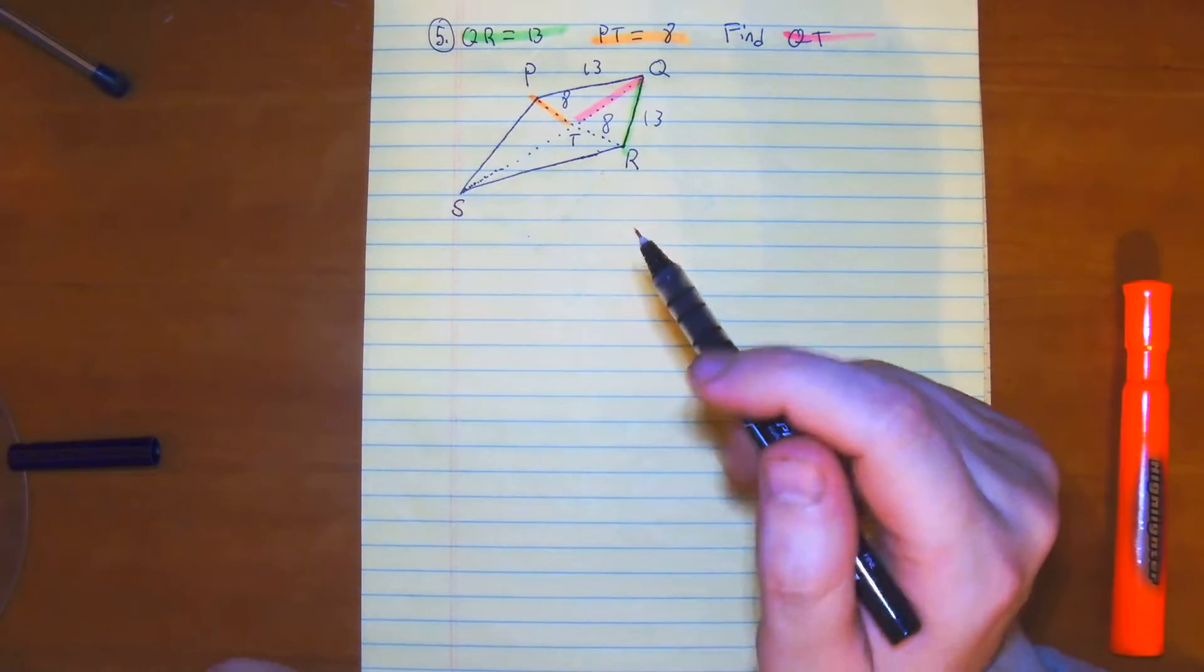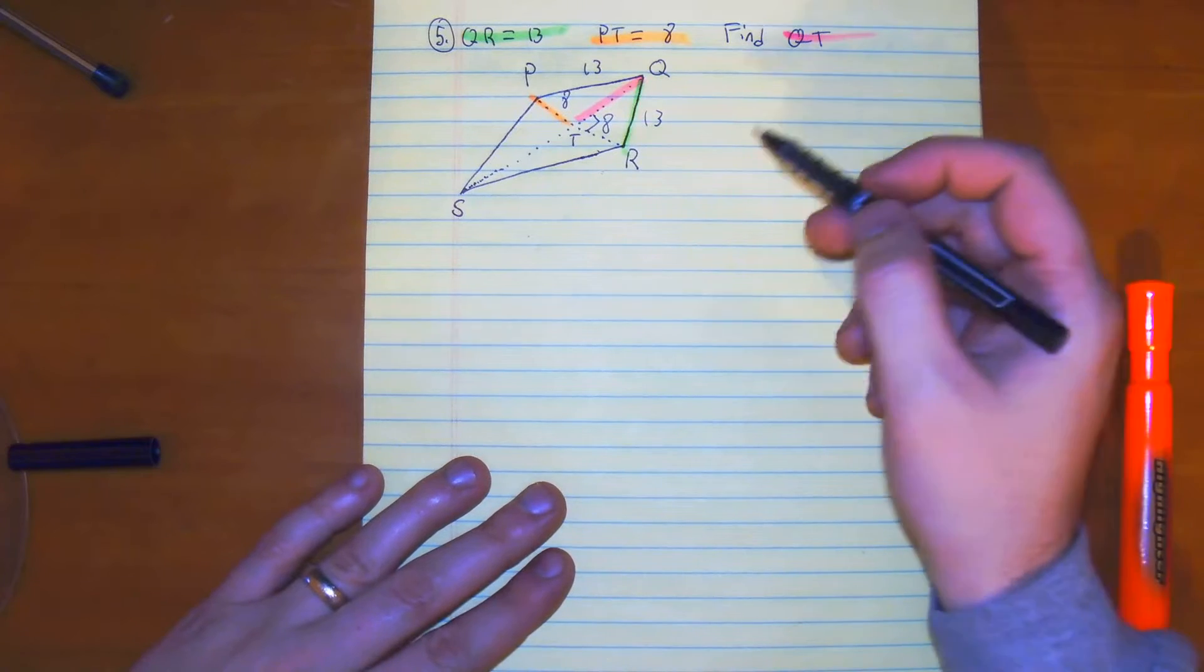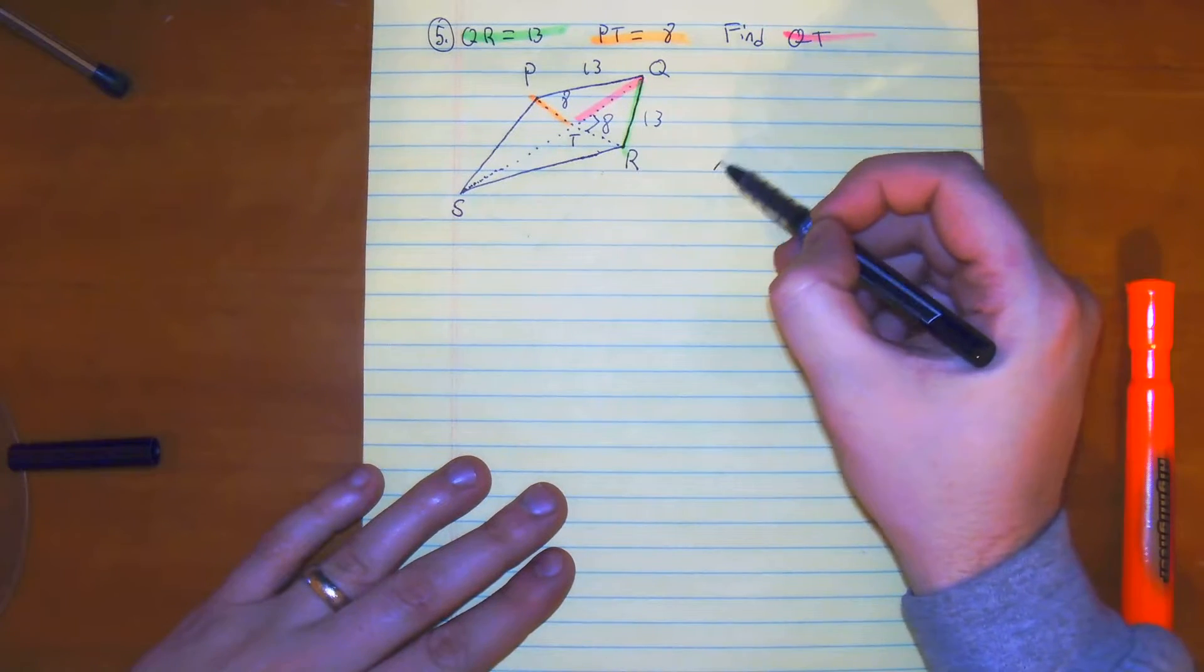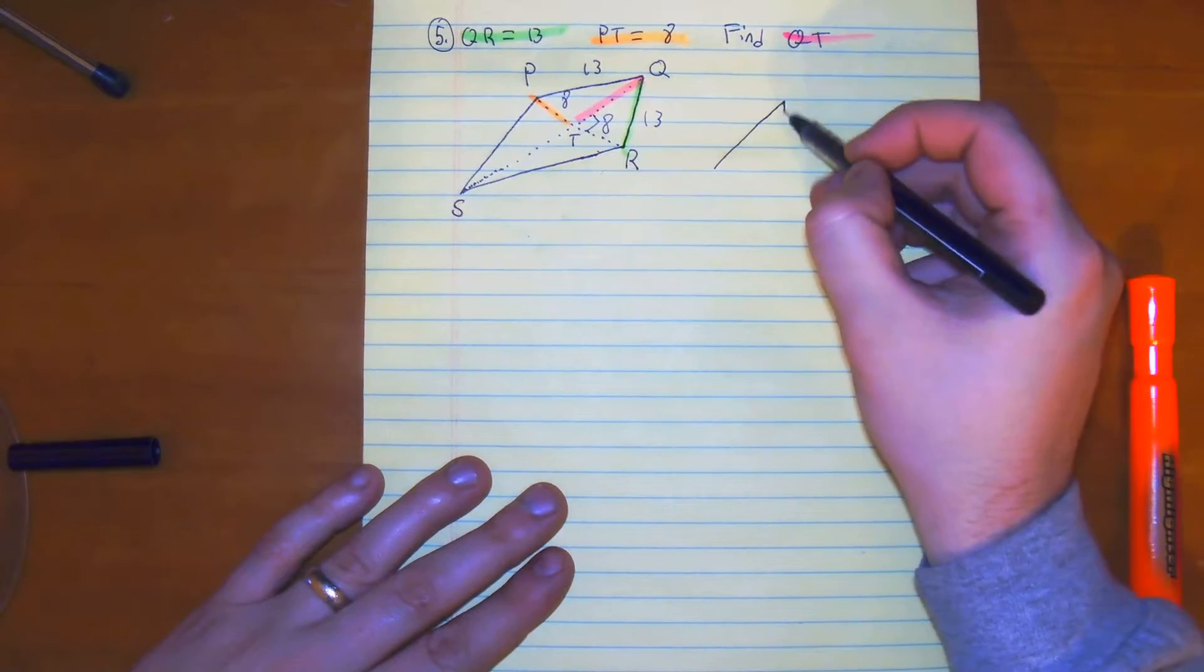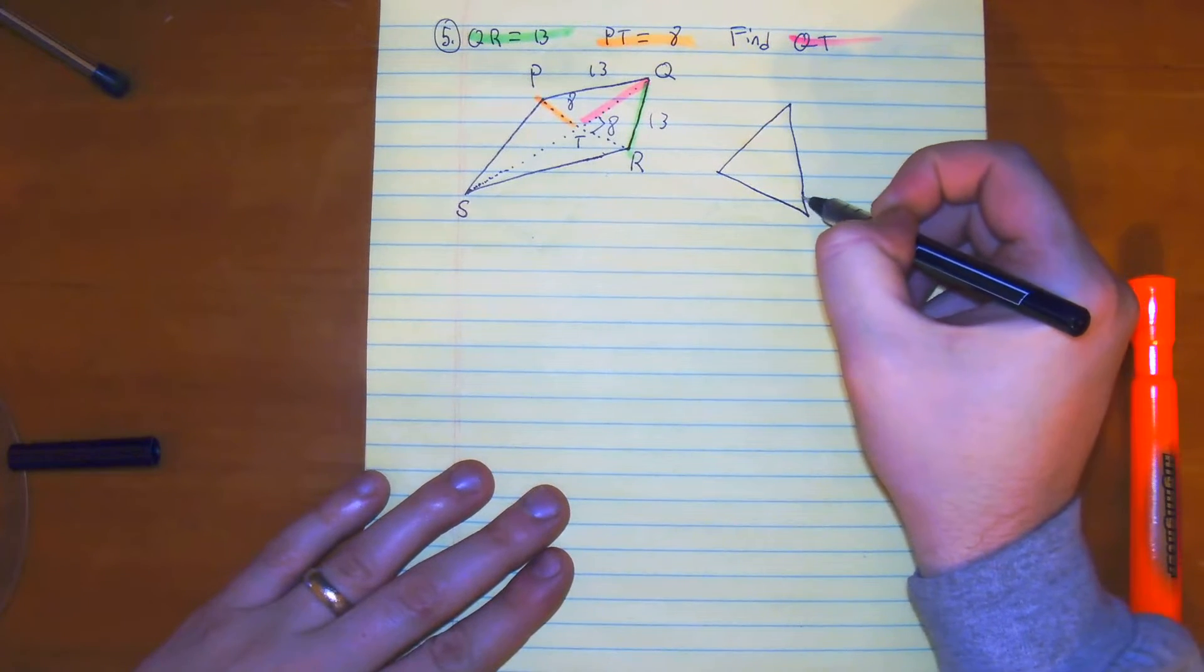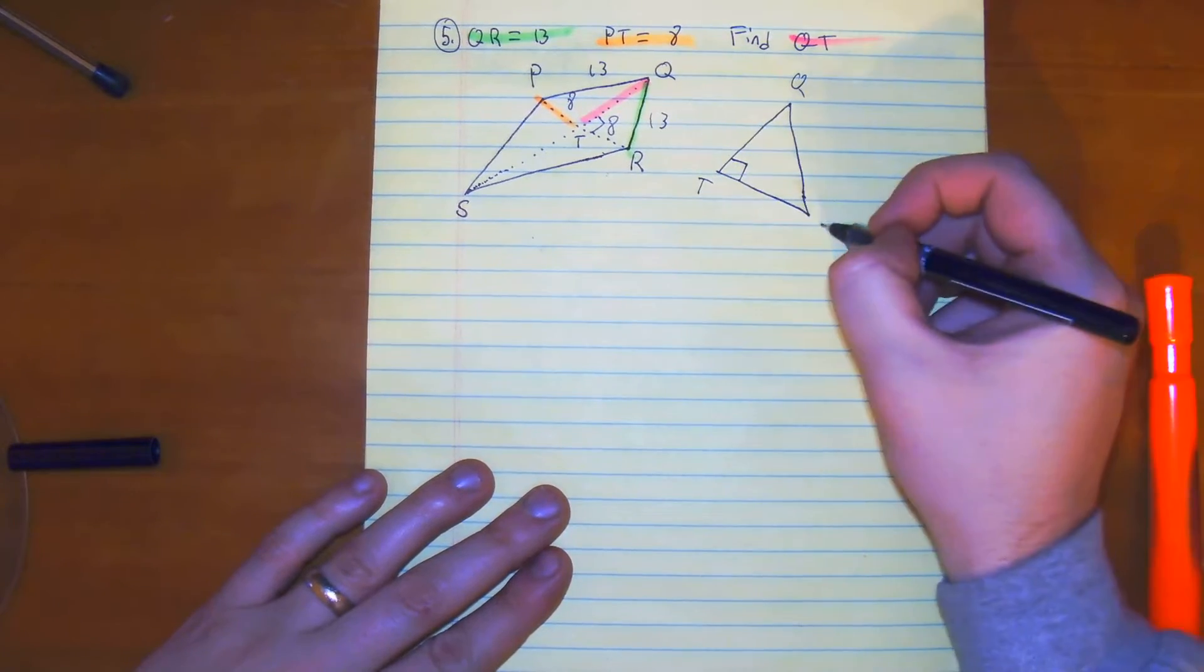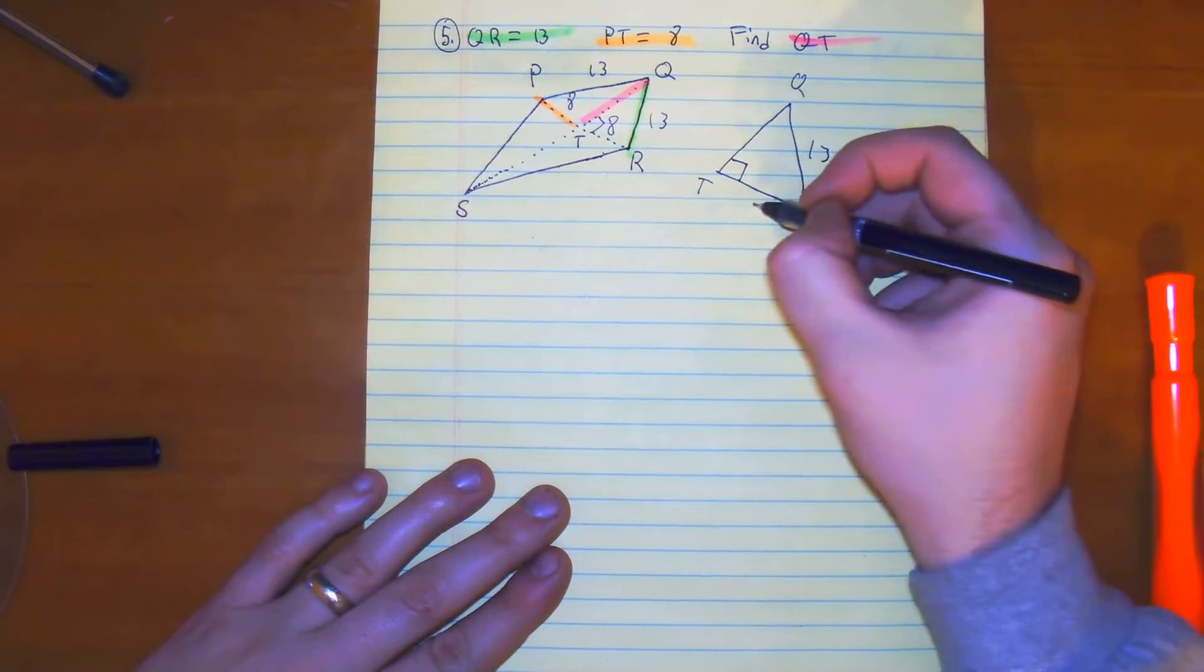So we want to find QT. We know that the diagonals are perpendicular in a kite, so we have a right triangle. If we redraw that, we have QTR with sides 13 and 8.